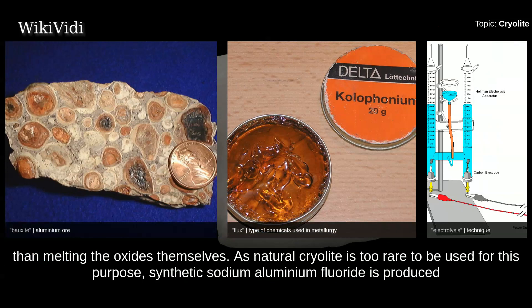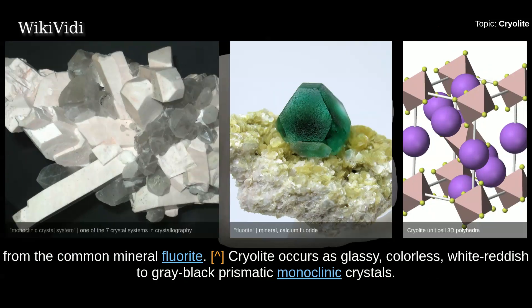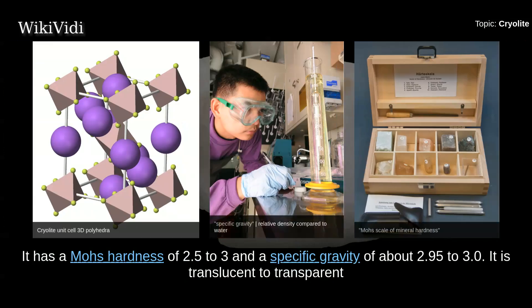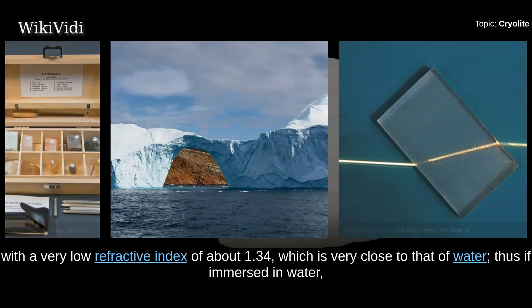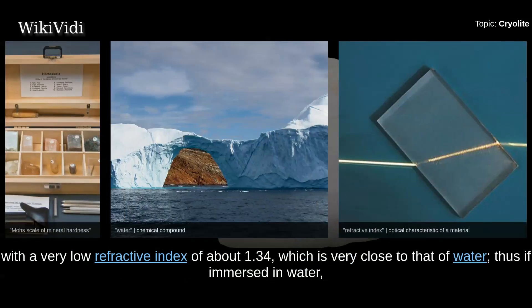As natural cryolite is too rare to be used for this purpose, synthetic sodium aluminium fluoride is produced from the common mineral fluorite. Cryolite occurs as glassy, colorless, white, reddish to gray-black prismatic monoclinic crystals. It has a Mohs hardness of 2.5 to 3 and a specific gravity of about 2.95 to 3.0. It is translucent to transparent with a very low refractive index of about 1.34, which is very close to that of water.